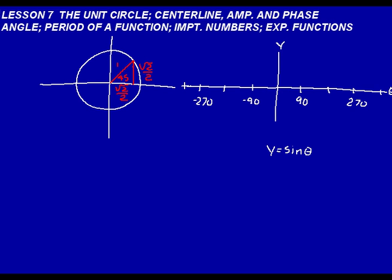Let's think about some values of sine θ that we know. When θ is 0, sine θ is 0 — put a dot there. When θ is 90, sine is 1. At 180, sine θ is 0. At 270, it's negative 1. At 360, we're back at 0. At minus 90, we'd be at minus 1. At minus 180, we'd be at 0. At minus 270, we'd be at 1. We can put a curve through those points. This is what y equals sine θ looks like — a sinusoidal pattern, a repeating or periodic pattern.